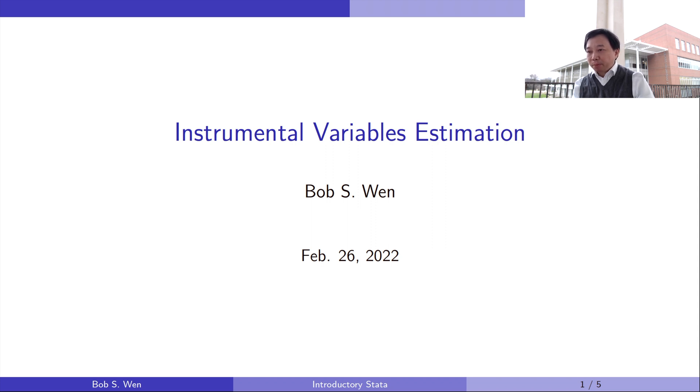The instrumental variable method tries to find the causal relationship by solving the endogeneity problem. The endogeneity problem often happens and it leads to inconsistent estimates using OLS.